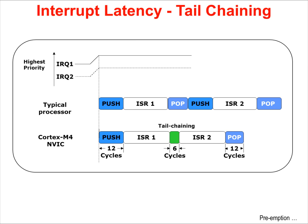Tail-chaining reduces interrupt latency. In this diagram, two interrupts go off at the same time: IRQ1, which is higher priority, and IRQ2. In a typical processor, the state of the processor would be pushed onto the stack, the highest priority ISR would run, and the state would be popped off the stack. The interrupt controller would then detect another interrupt pending and repeat the process for the lower priority interrupt. Note that the pop and push in the middle are doing the exact same thing but in opposite directions — there's really no need to do those.